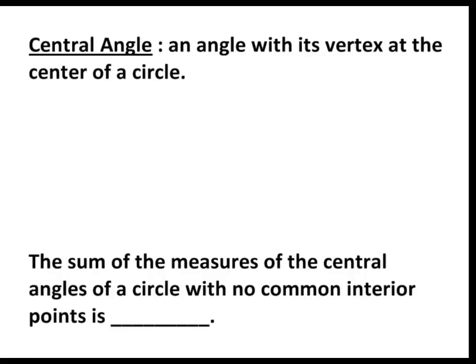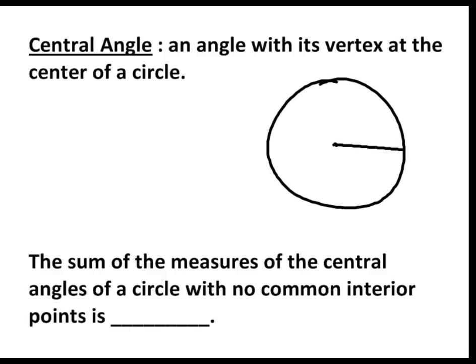Our first definition is a central angle. A central angle is an angle that has its vertex at the center of a circle. If I draw a circle here and have two radii drawn in, I've basically created an angle. I'm going to call this angle ABC. Angle ABC is a central angle — its vertex is at the center of the circle, and both of its sides are radii.